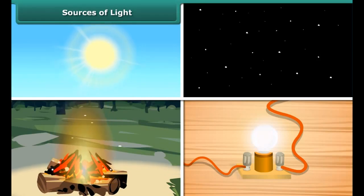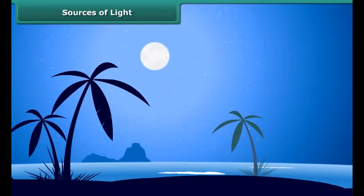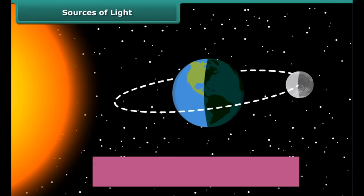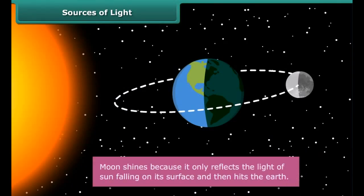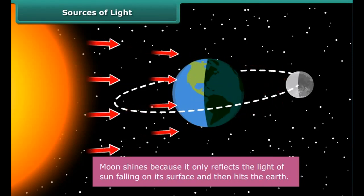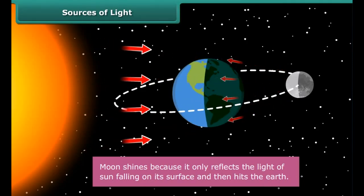But wait, not all things that shine are light sources. The moon is not a natural source of light. It does not have its own light. It only reflects the light of the sun falling on its surface, which then hits the earth, making it appear shiny when seen from earth.